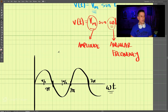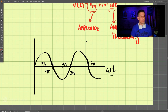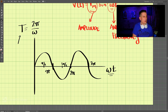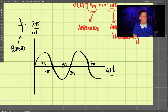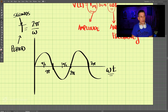Another value we like to calculate is T, the period, which equals 2π divided by omega. The period is measured in seconds and represents the amount of time to complete one full cycle — from one point on the wave back to the same point.